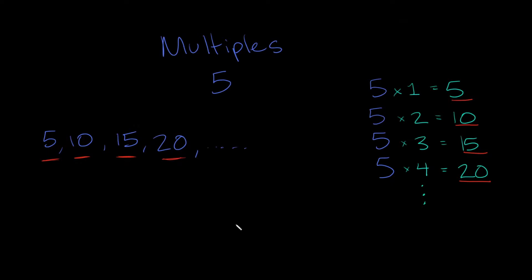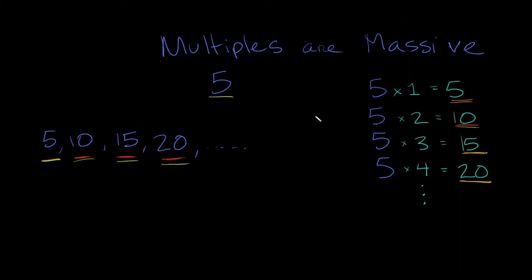Something really important to notice is that multiples are always bigger than the number you started with. We started with five, and all the multiples we got are bigger than five — or in some cases equal to five, like right here. A way to remember this is: multiples are massive. Whenever you start with a number, your multiples are either going to be equal to or, in most cases, greater than that number. Ten, fifteen, twenty — these are all bigger than five.